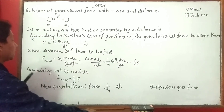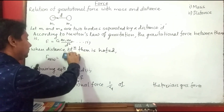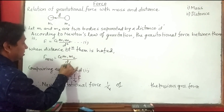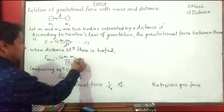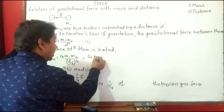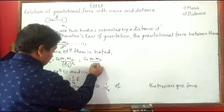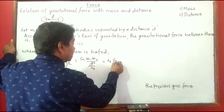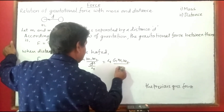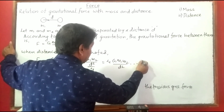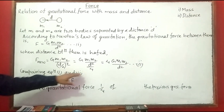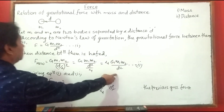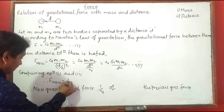New gravitational force: distance is altered. G remains the same, m1 remains the same, m2 remains the same. Distance is halved, so instead of d, we write d/2 whole squared. This is equal to G·m1·m2 / (d²/4). The denominator d/2 squared equals d²/4, which goes up to give 4·G·m1·m2 / d². This is equation number two. Comparing equation one and two, G·m1·m2 / d² can be taken as F, so F_new = 4F.